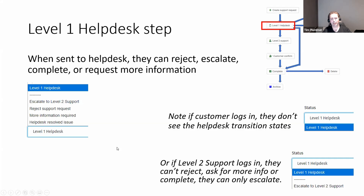If a customer was to log in and look at their support request, they wouldn't have any other statuses because they don't have permission to do any of these transitions — we denied the customer permission to escalate to level two support or reject it. The level two support person, if they go in and see what they can do, we've given them permission to escalate to level two support but not to reject, ask for more information, or immediately complete.